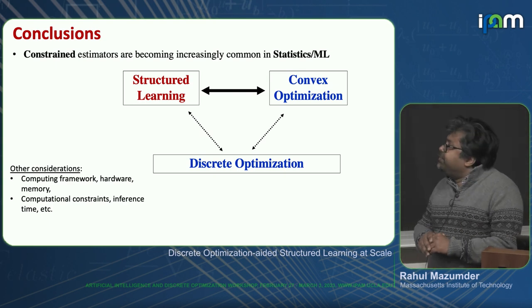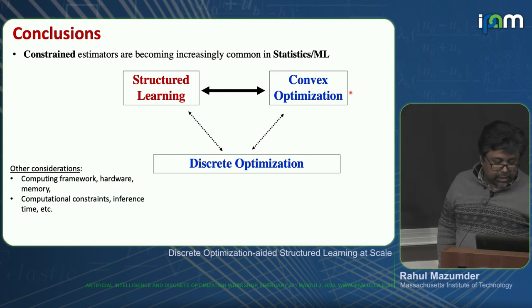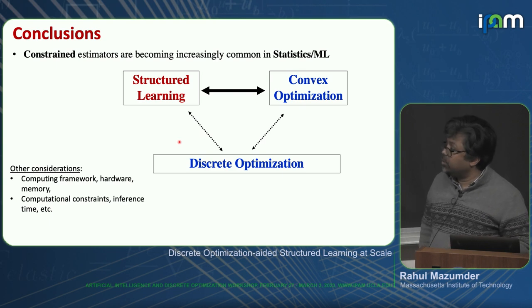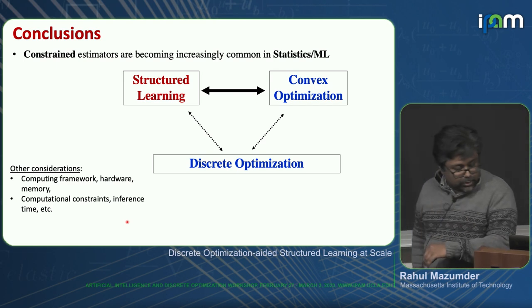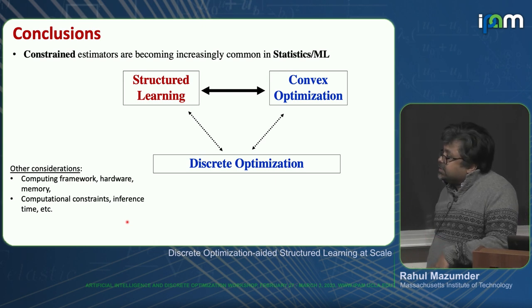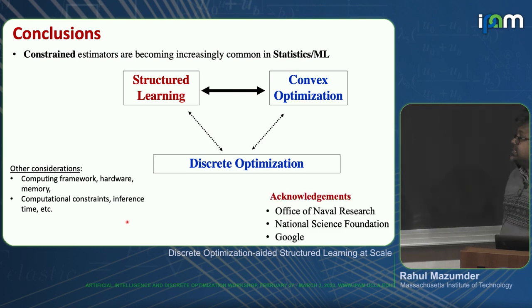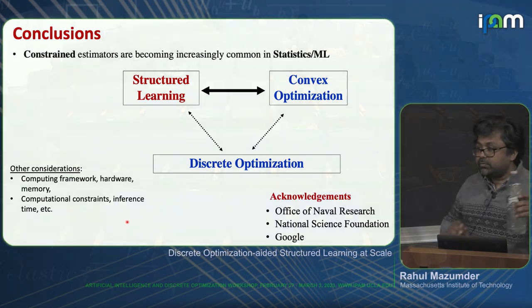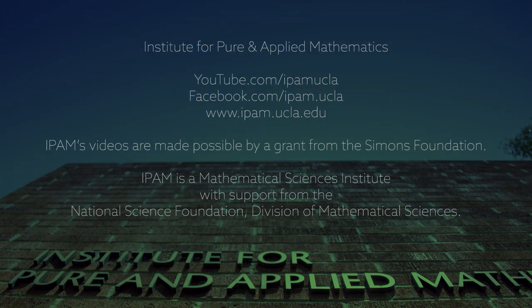Hopefully by now I have given you a glimpse of the various components of this puzzle. There is statistics, there is convex optimization playing a role, and there is discrete optimization playing a role. Some of these are very well formalized; some are not very well understood — especially if you bring in other considerations like computing framework, things become much more interesting and something worth thinking about. Thank you, everyone.